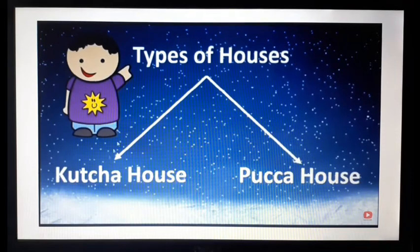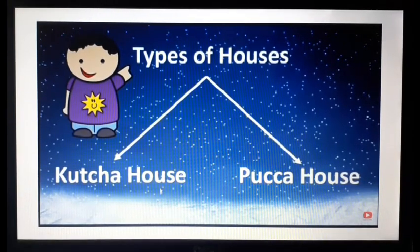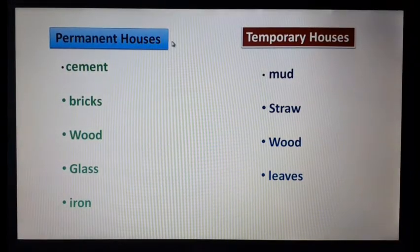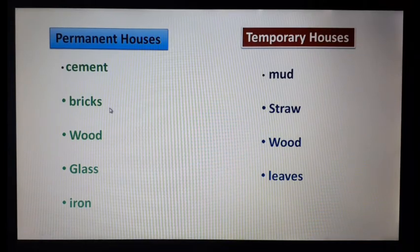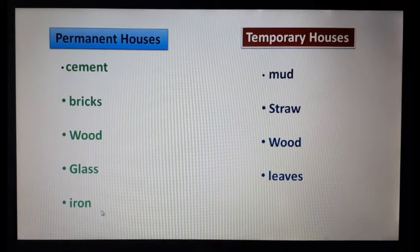We generally have two types of houses. Kaccha houses, we call them temporary houses. Pakka houses, we call them permanent houses. Permanent houses are made up of cement, bricks, wood, glass, iron, steel etc.